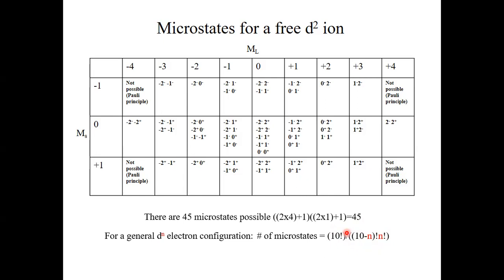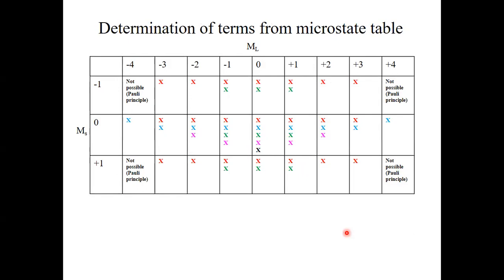The big question is: which of these 45 microstates are energetically equal? A set of energetically equal microstates defines a term. This can be derived from the microstate table, where each possible microstate is designated by an X. Color-coding identifies microstates that have the same energy — all red X's have the same energy, all light-blue ones have the same energy, and so forth.